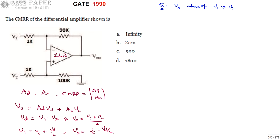All similar terms are going to be taken together such that you are going to write the expression in terms of V0 equals AD VD plus AC VC. From this, you are identifying AD and AC terms, then you are going to get the ratio of AD by AC as CMRR.